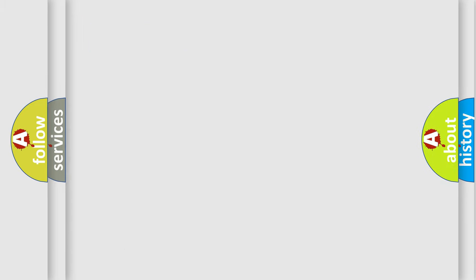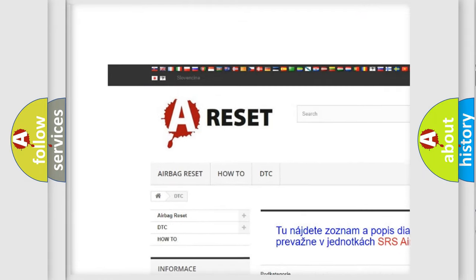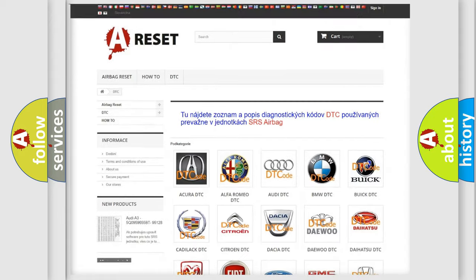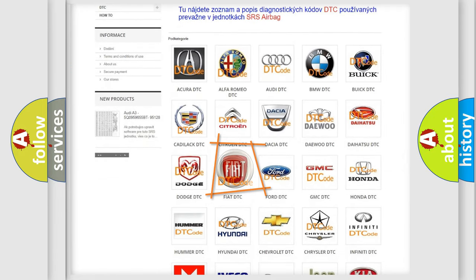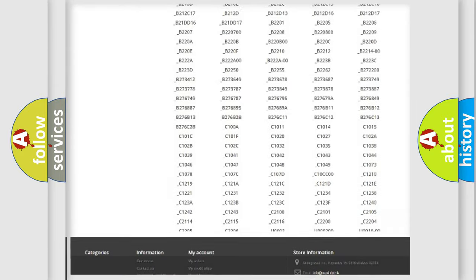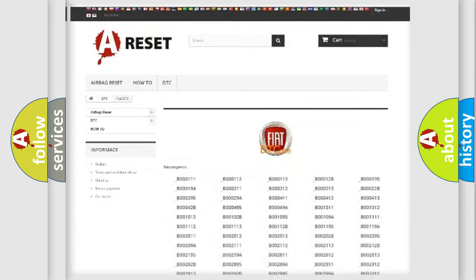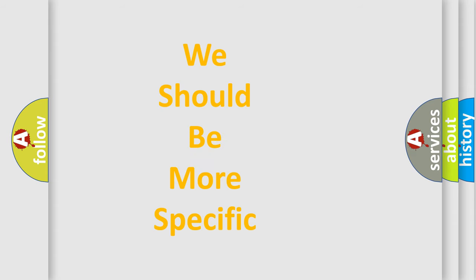Our website airbagreset.sk produces useful videos for you. You do not have to go through the OBD2 protocol anymore to know how to troubleshoot any car breakdown. You will find all the diagnostic codes that can be diagnosed in Fiat vehicles, and many other useful things. The following demonstration will help you look into the world of software for car control units.